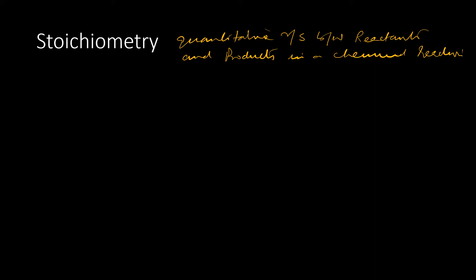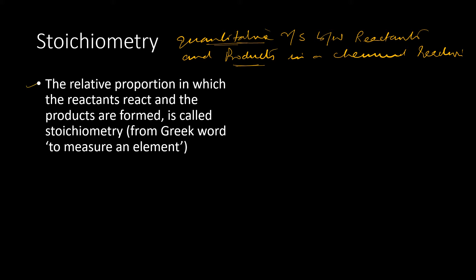Stoichiometry tells us the quantitative relation — how much quantity of reactants are reacting to form products. It describes the relative proportion in which reactants react and products are formed. The word stoichiometry comes from a Greek word meaning 'to measure.' Let us now try to understand mathematically what stoichiometry basically is.